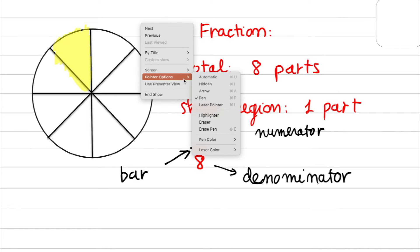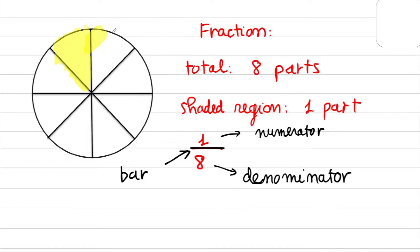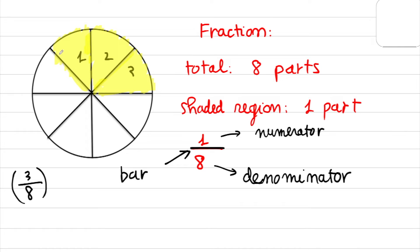And when I want to shade one more part here, and one more part here — so you can see I have 8 parts in total, and I have 3 shaded parts. So this one is 3 over 8. The fraction for this shaded region is 3 over 8.